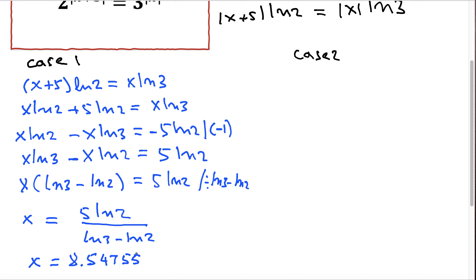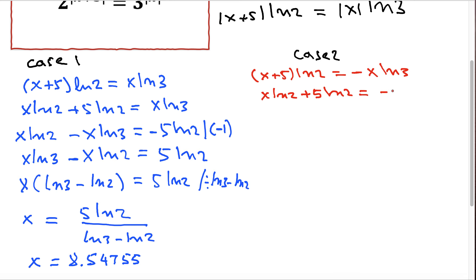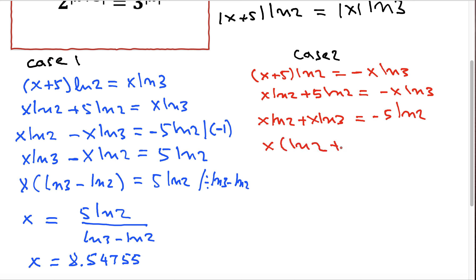In Case 2, we have (x plus 5) LN 2 equals negative x LN 3. Distributing the same way as in Case 1, we get x LN 2 plus 5 LN 2 equals negative x LN 3. Adding x LN 3 to both sides and subtracting 5 LN 2, this becomes x times (LN 2 plus LN 3) equals negative 5 LN 2.